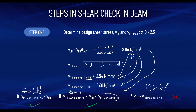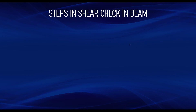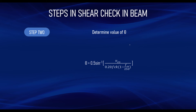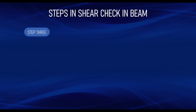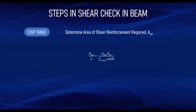Since we are in Condition 2, Step 2 is to determine the exact value of theta. Using the formula with vEd and fck, we get theta = 27.85°, which is indeed between 21.8° and 45°. Step 3 is to determine the area of shear reinforcement using the standard formula. Substituting the known values of theta, fywk, vEd, and bw, we get Asw/s = 0.9 mm²/mm.